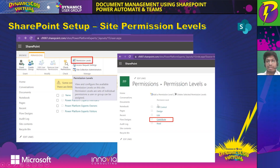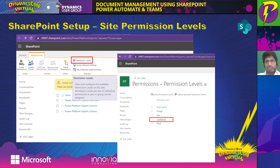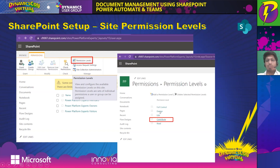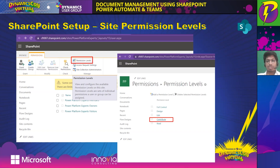The SharePoint site is divided into permission levels: full access, design permission, edit permission, contribute permission, and read permission. We will be using design permissions for our approvers — that is, our solution architects. Design permission is slightly less than a super user but equivalent in most ways — it can't do all global admin jobs. Hence, we'll give design permissions to our solution architects.